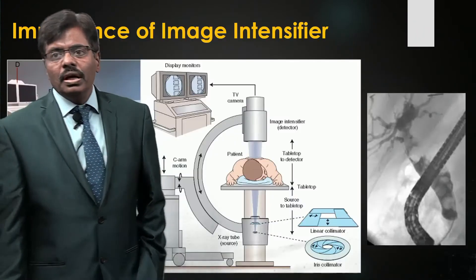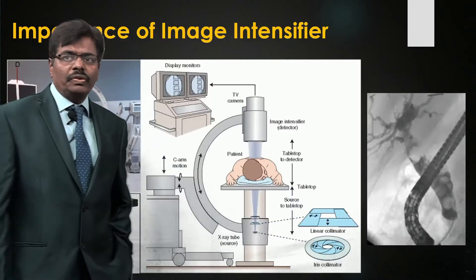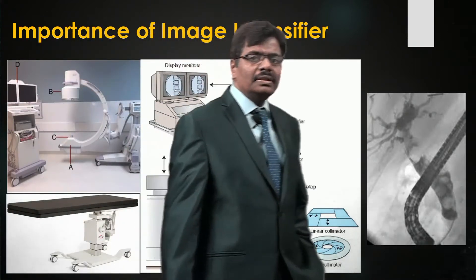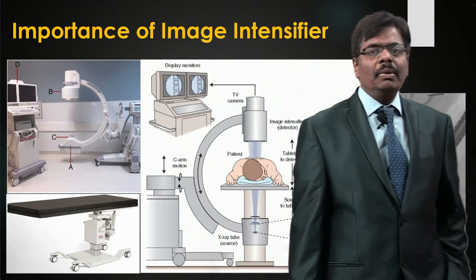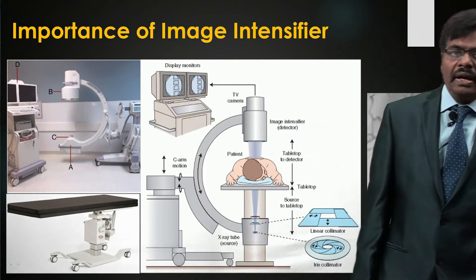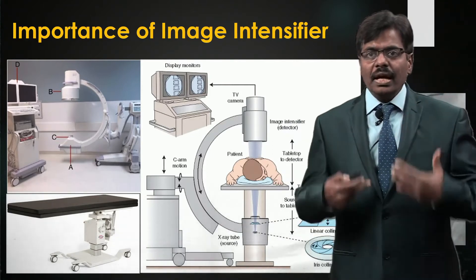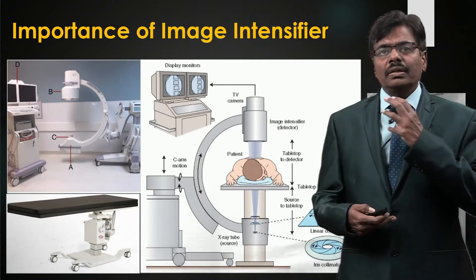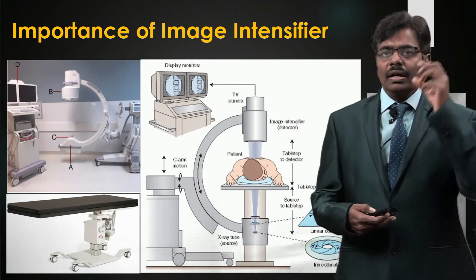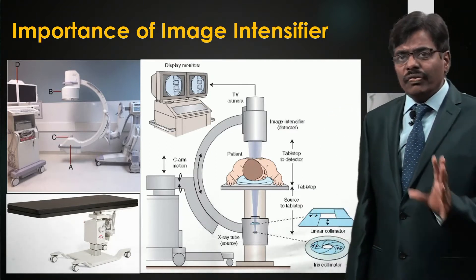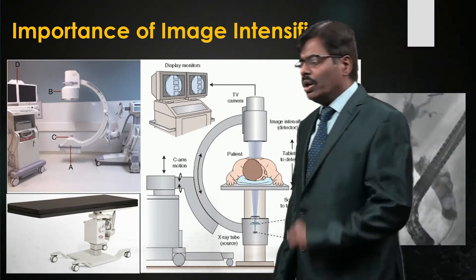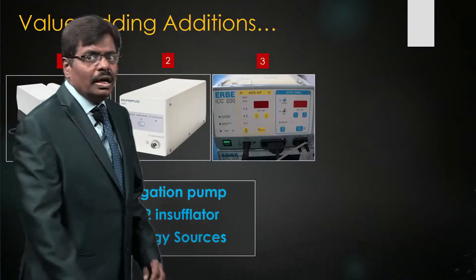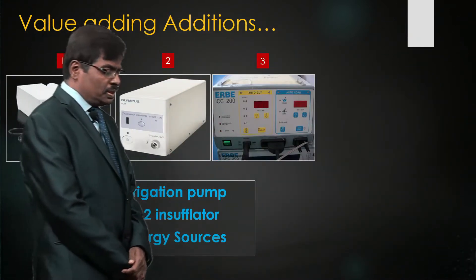You need a spacious room — minimum 16 by 16 feet — for a comfortable working atmosphere. The image intensifier is important, and the protective gear you need includes a lead apron, thyroid cover, and goggles. These are essential not only for you but for all your staff as well.